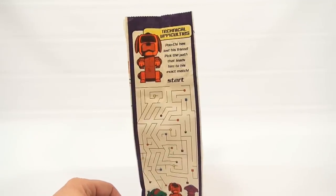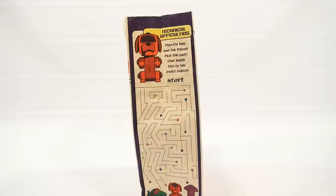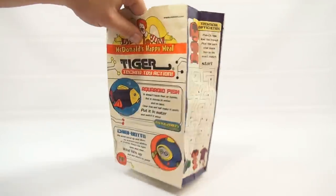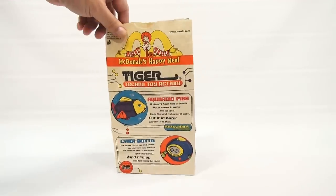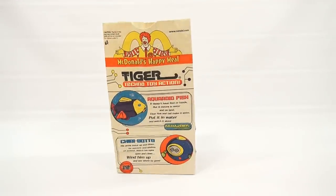There's Poochie. It says Poochie has lost his friend. Pick the path that leads him to the exact match. All right. So that pretty much goes over the bag. So when I come back, I will have some scissors and we will start toy number one.